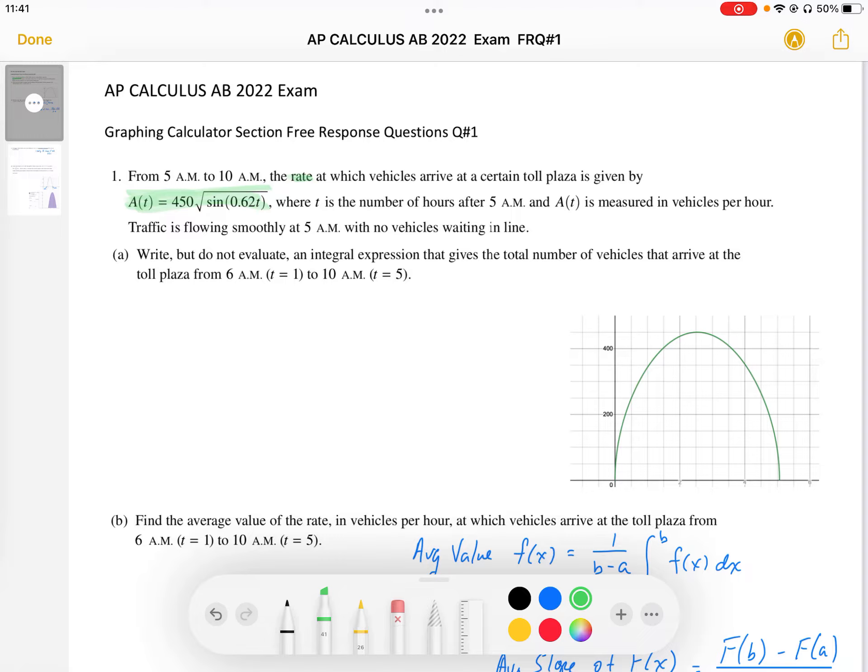Where t is the number of hours after 5 a.m. and a(t) is measured in vehicles per hour. Again, the vehicles per hour indicates that it's a rate.